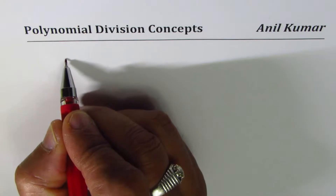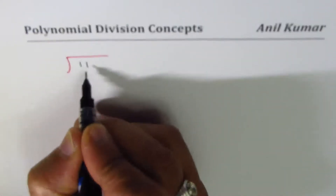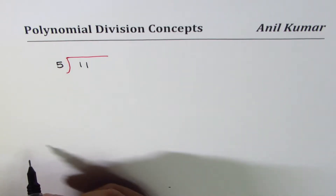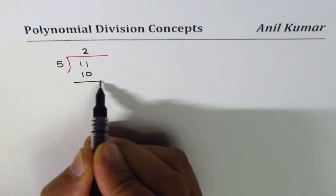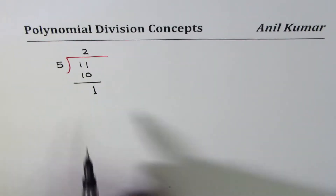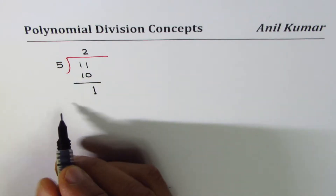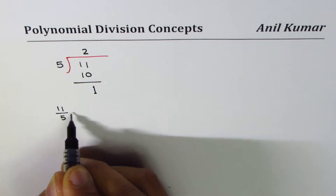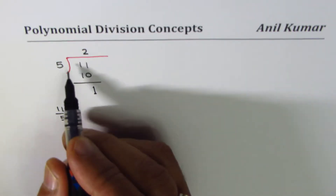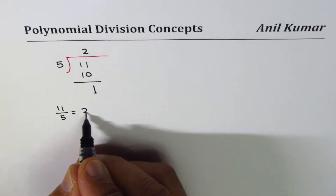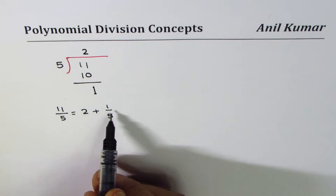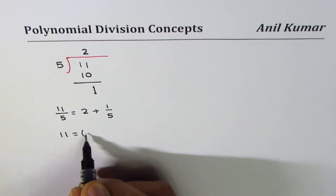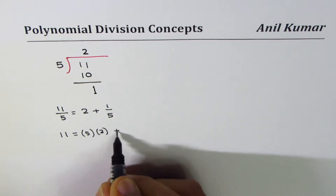Let's begin with polynomial division. We'll start from what we really know, and that is how to divide numbers. Let's say I have to divide 11 by 5. In long division, 5 goes 2 times; we write 10 underneath, take away 10 from 11, and what we get is the remainder 1. We can write a statement saying 11 divided by 5 equals quotient 2 plus remainder 1 over 5.